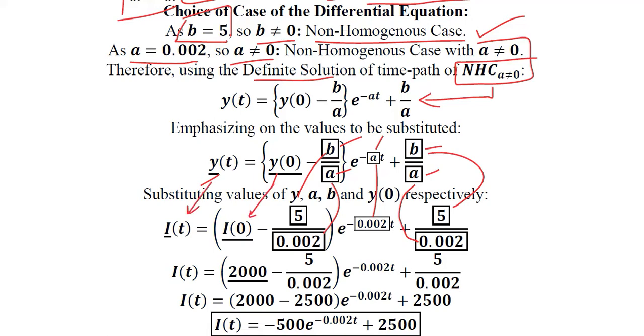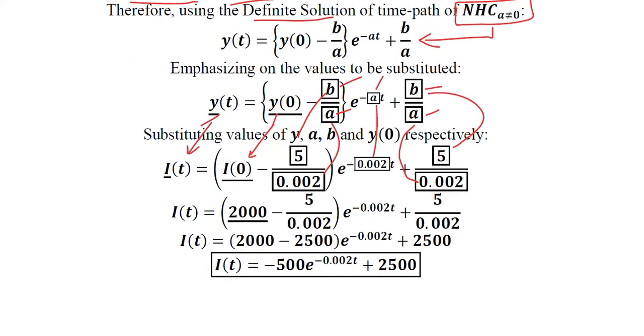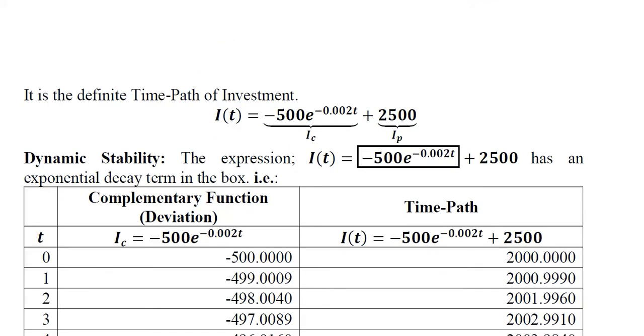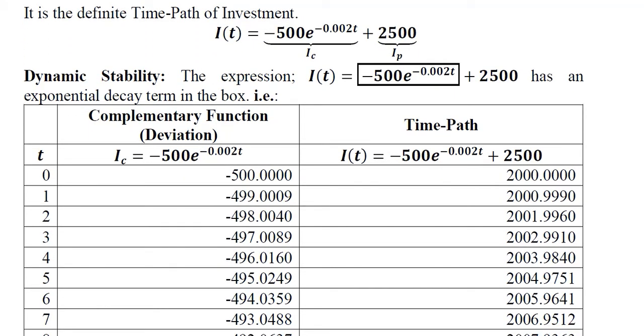After this we can simply solve these expressions which is definitely an easy thing to do because this is simple algebra. And finally the time path is there. This is the complementary function of the investment and this is the particular integral part of the investment function. So this definite time path is now developed because there is no arbitrary constant in it.